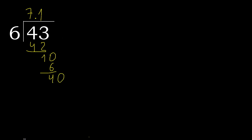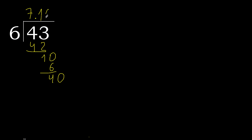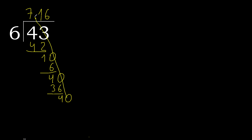Always complete with 0. Point is here. 40. 6 multiplied by 6 is 36. Subtract — complete. Always complete with 0.